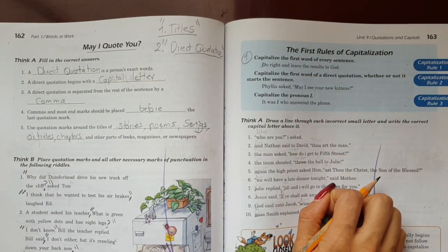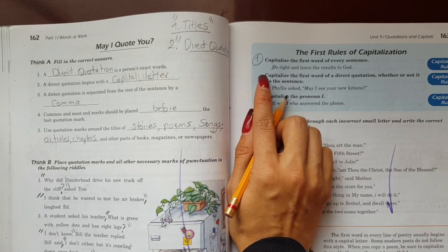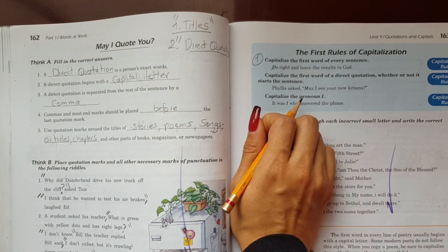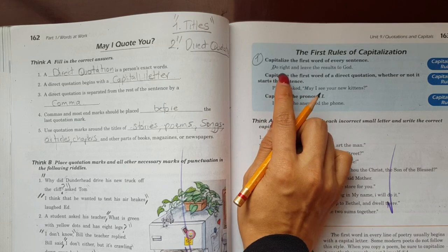Put in capital the first word of every sentence. Both in Spanish and in English, when you start a sentence, you always start it with a capital letter. Always.